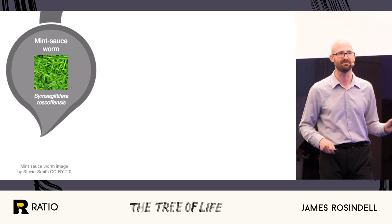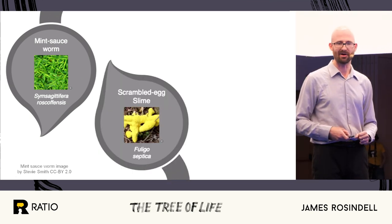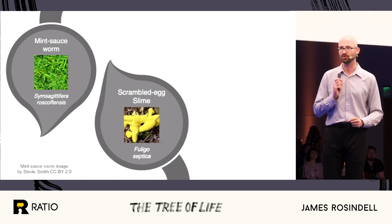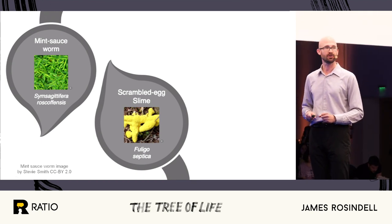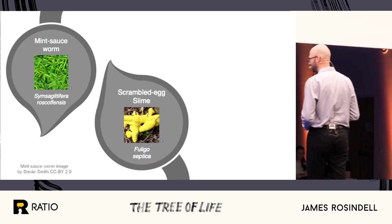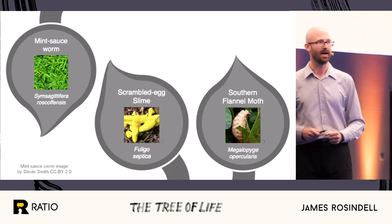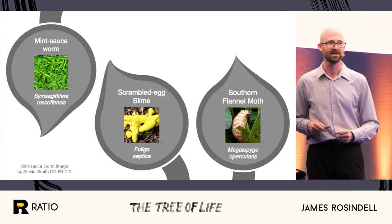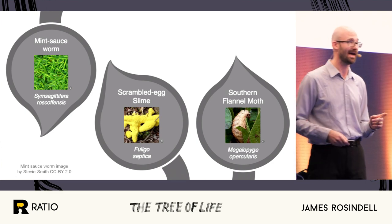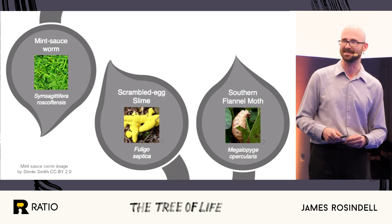A couple of other crazy names before we get to the real thing here. This one is the scrambled egg slime, also known as — and I'm not making this up — the dog's vomit slime mold. This one is the southern flannel moth, which has venomous hairs as its larvae — which is a caterpillar — also known as, and I'm not making this up either, the Donald Trump caterpillar.